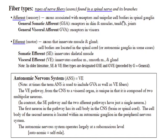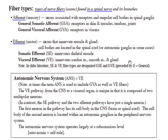All of the spinal nerves and their dorsal and ventral major branches contain four fiber types. Two are afferent: general somatic afferent to skin, muscles, tendons, and joints, and general visceral afferent to walls of blood vessels in skin and muscles. They also contain two kinds of efferent axons: somatic efferent, which innervates skeletal muscle, and visceral efferent, which innervates viscera — namely cardiac muscle, smooth muscle, and gland.